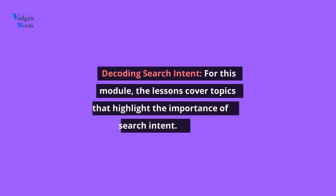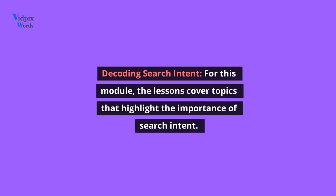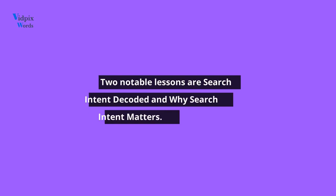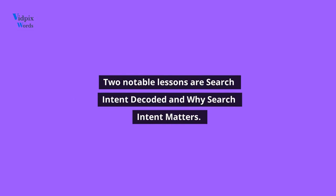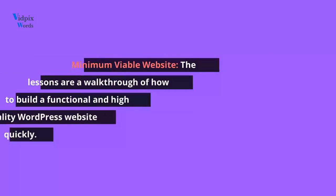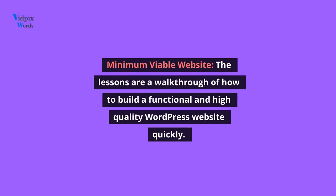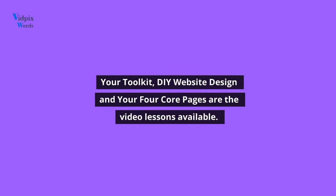The fourth module is Decoding Search Intent, where lessons cover topics that highlight the importance of search intent. Two notable lessons are Search Intent Decoded and Why Search Intent Matters. The fifth module, Minimum Viable Website, provides a walkthrough of how to build a functional and high-quality WordPress website quickly. Your toolkit, DIY website design, and your four core pages are the video lessons available.